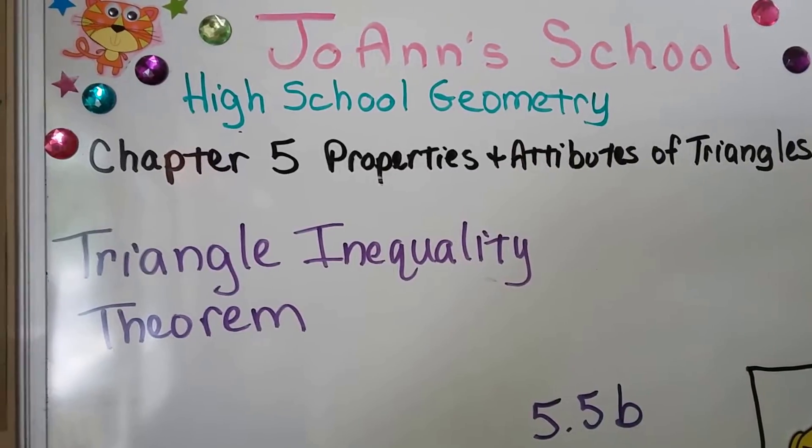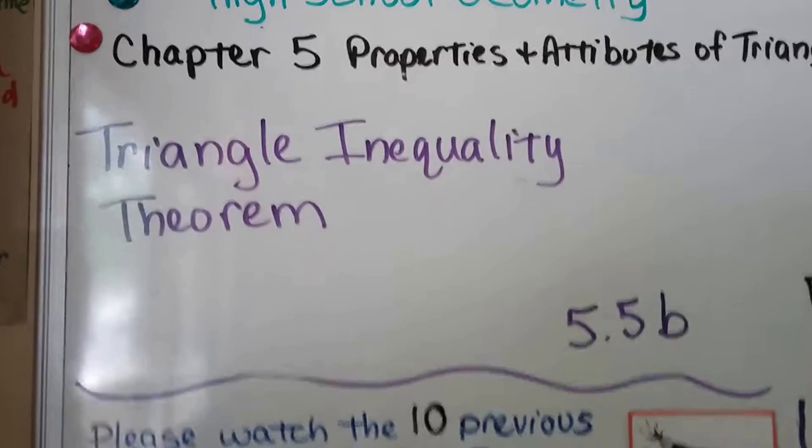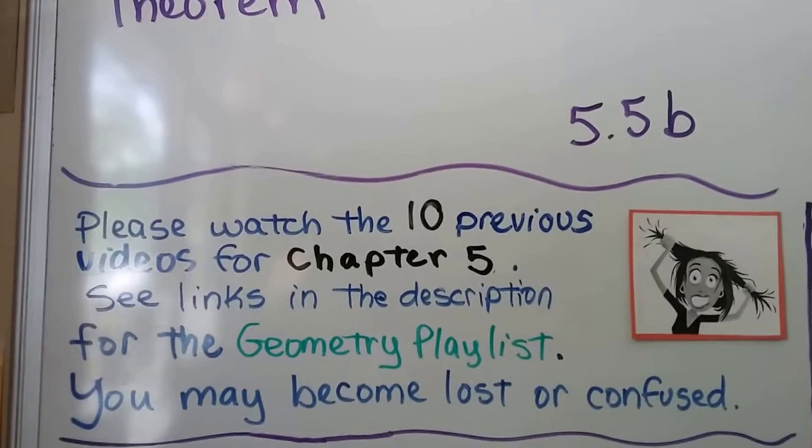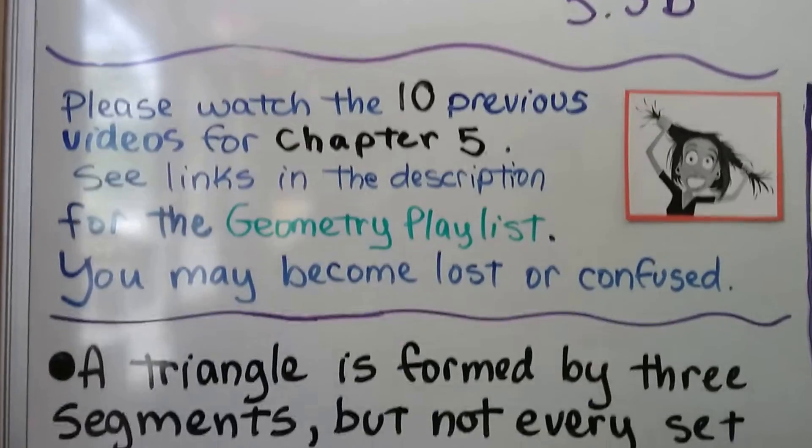In Triangle Inequality Theorem, this is 5.5b. We're up to 10 previous videos for chapter 5 that are in the geometry playlist.